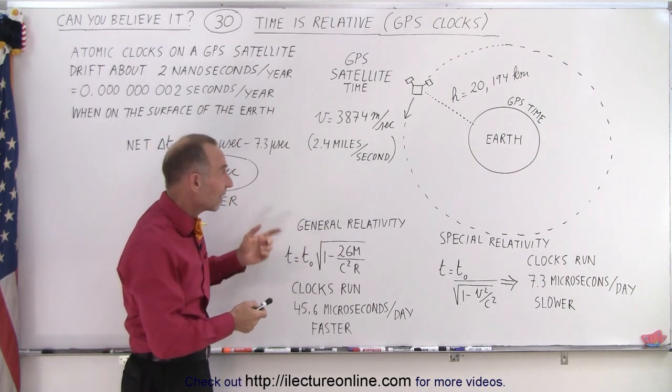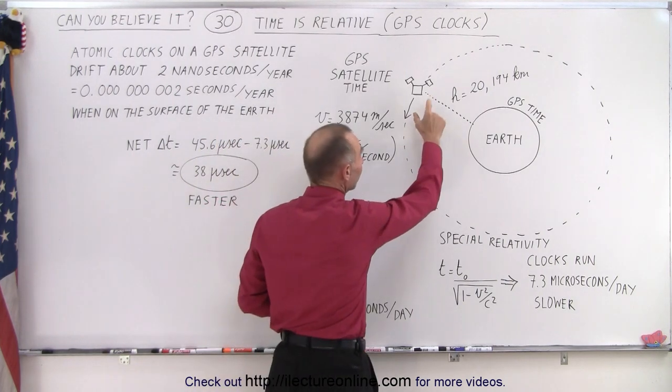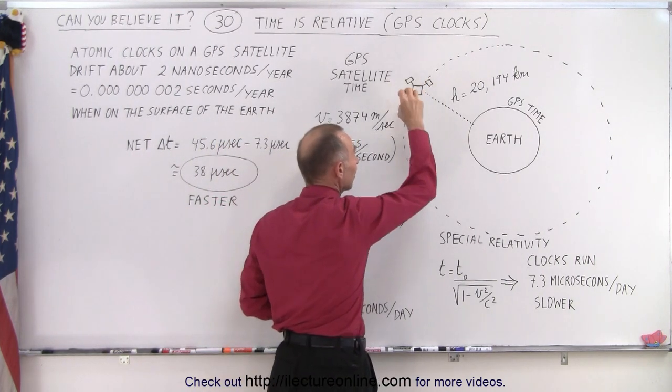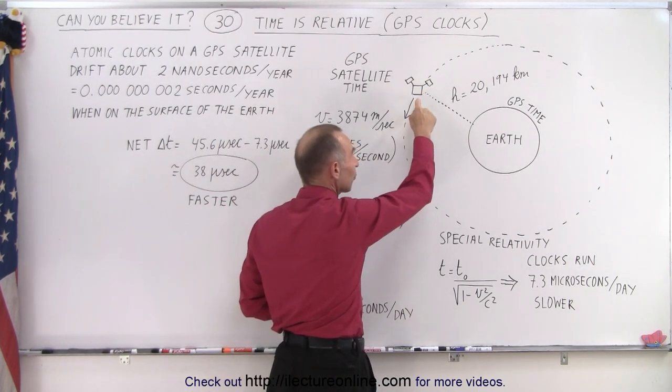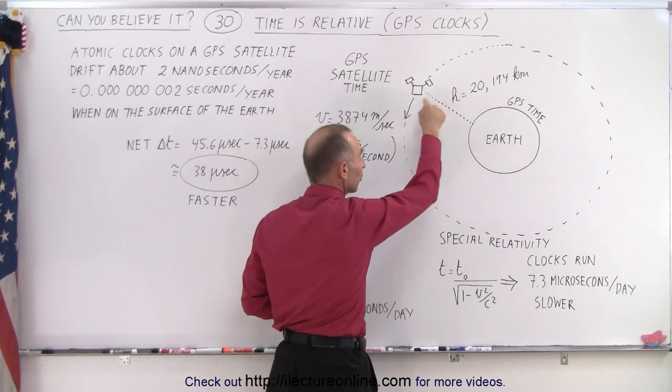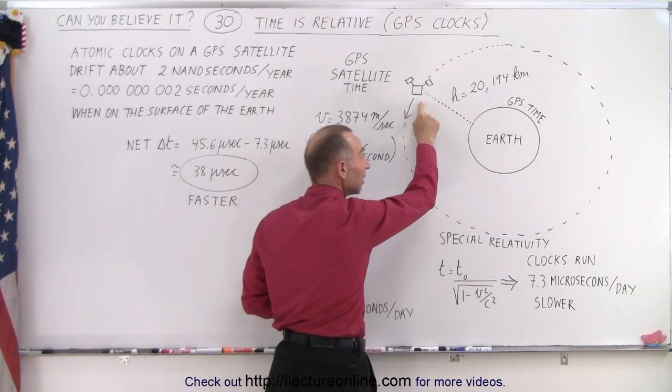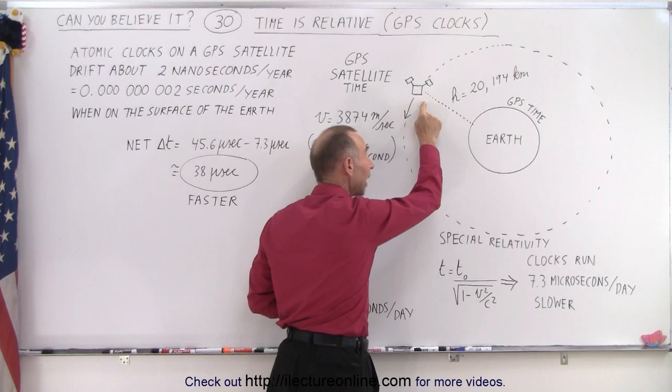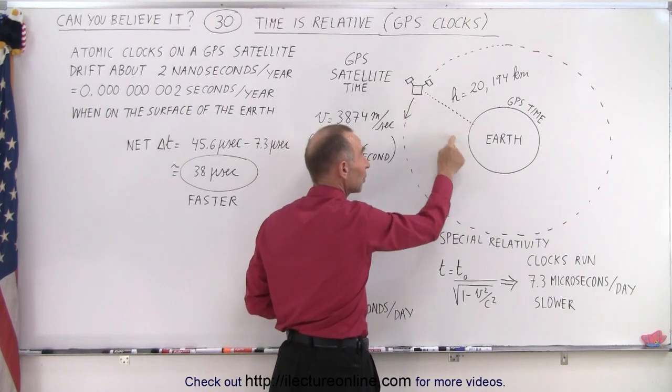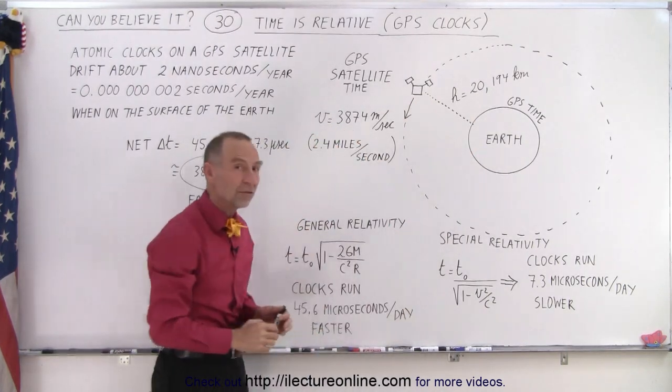But on top of that, satellites are so far away from the Earth that the gravitational force is a lot less there. And since the gravitational force is less that far away from the surface of the Earth, time actually runs faster in space at that height away from the Earth than it does on the surface of the Earth itself.